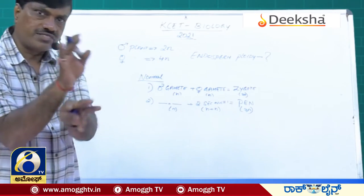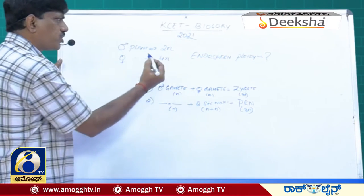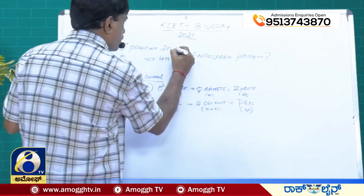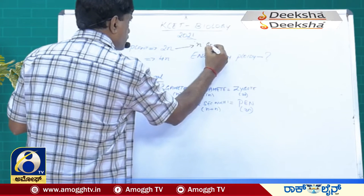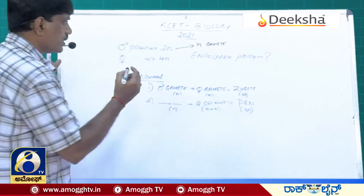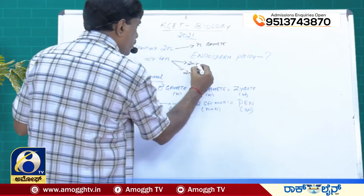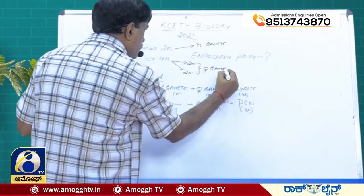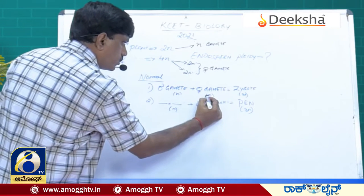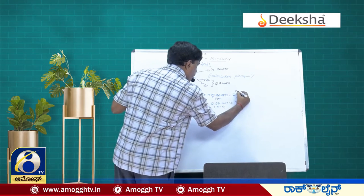But here there is a twist — the ploidy level has been changed. The male plant is diploid as usual, so after meiosis it produces haploid gametes. But the female plant is tetraploid, not diploid. So its cells undergo division to give 2n female gametes. Therefore the male gamete is haploid and the female gamete is diploid, giving a triploid zygote (n + 2n = 3n).